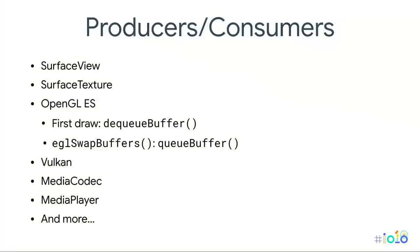Here's a list of different producers and consumers in the platform. OpenGL ES can be both a producer and a consumer. When the render thread does the first draw call, it calls dequeueBuffer, and at the end when we call eglSwapBuffers, it queues the frame back into the buffer queue. You can also use Vulkan, the media player, and MediaCodec, and there are many more throughout the platform.